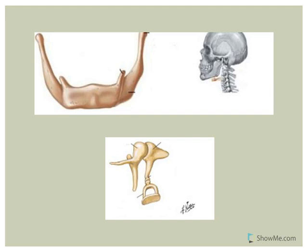Here is the hyoid bone — this is actually where you find it. It's the only bone that doesn't articulate with another bone; it's not directly attached. The hyoid bone helps support the tongue. Forensically, if someone is found dead, a fractured hyoid bone often indicates strangulation.